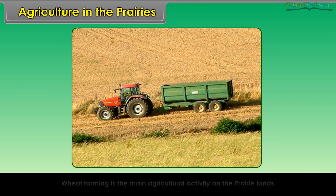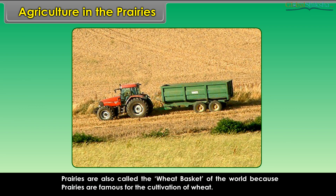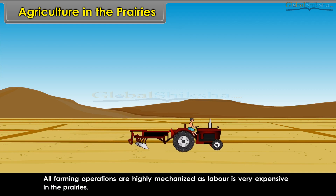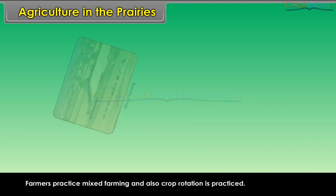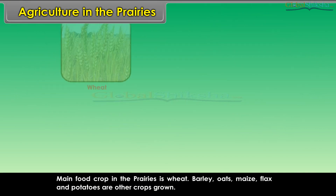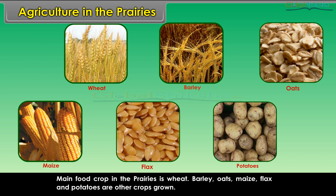Wheat farming is the main agricultural activity on the prairie lands. Prairies are known as the granaries of the world due to huge surplus of wheat production, and are also called the wheat basket of the world. All farming operations are highly mechanized as labor is very expensive. Wheat is harvested with combined harvesters and threshers. Farmers practice mixed farming and crop rotation. The main food crop is wheat, while barley, oats, maize, flax, and potatoes are other crops grown.